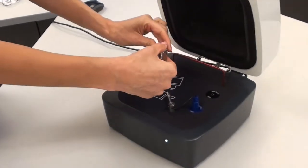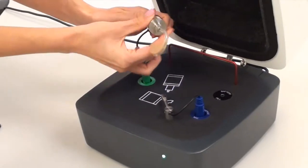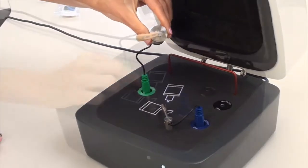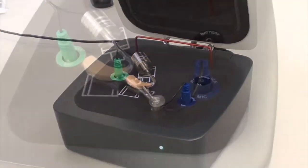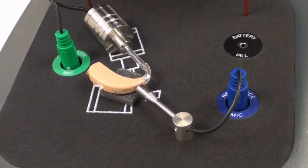Attach the 2cc coupler with the BTE adapter to the coupler microphone. The hearing aid should also be the same height above the foam surface as a reference microphone. You can use the foam pad included in the kit if necessary.